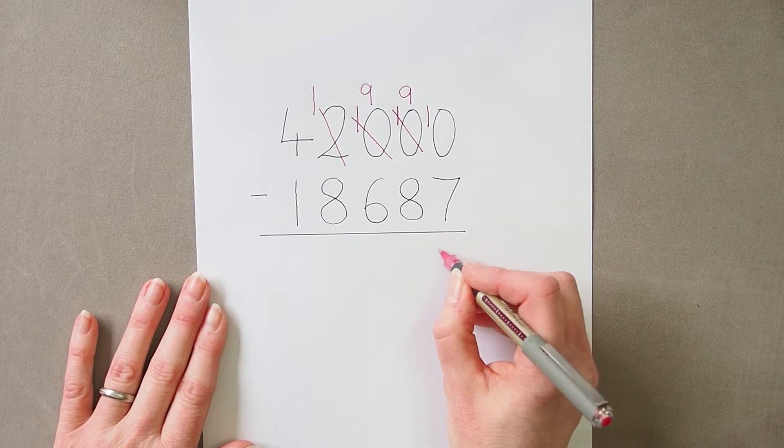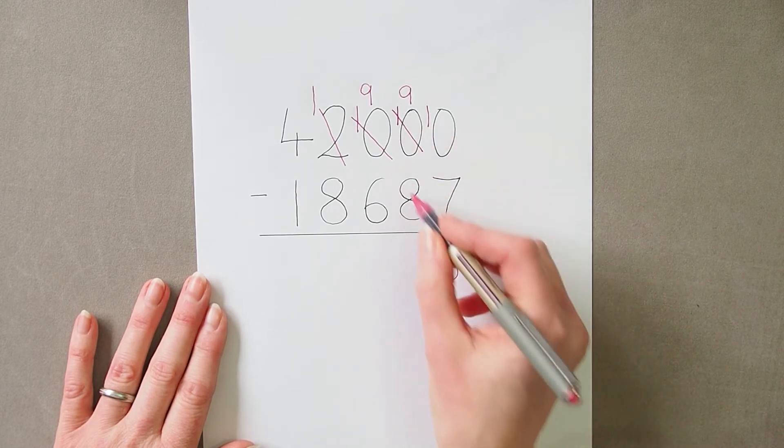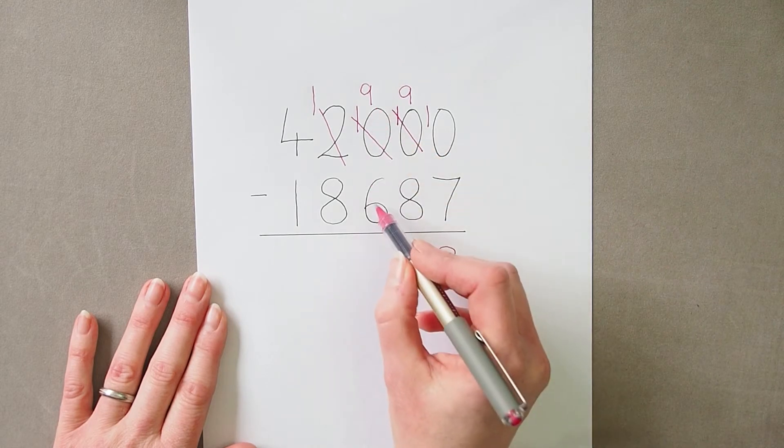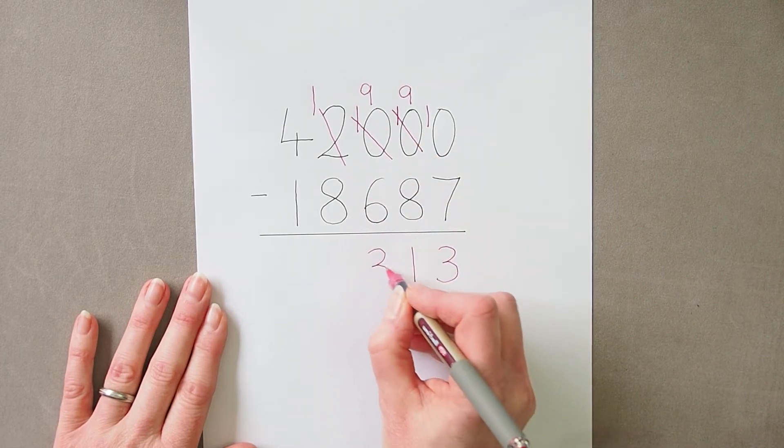Ten subtract seven is three, nine subtract eight is one, nine take away six is three.